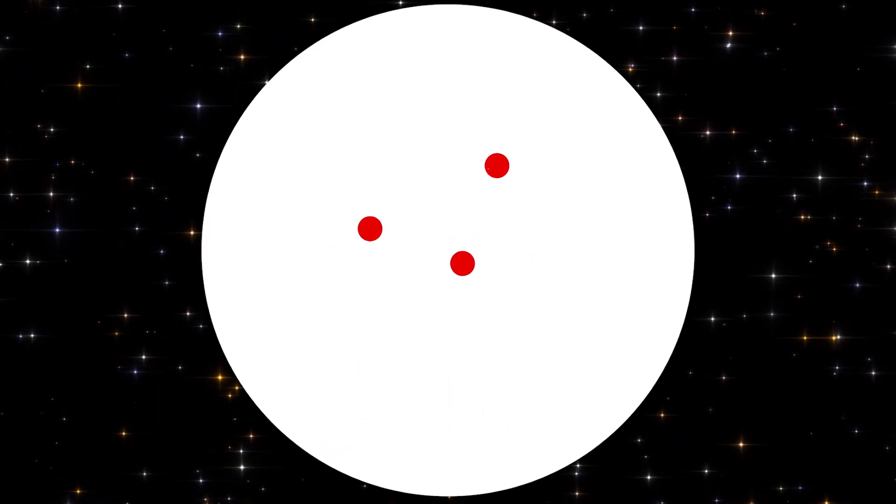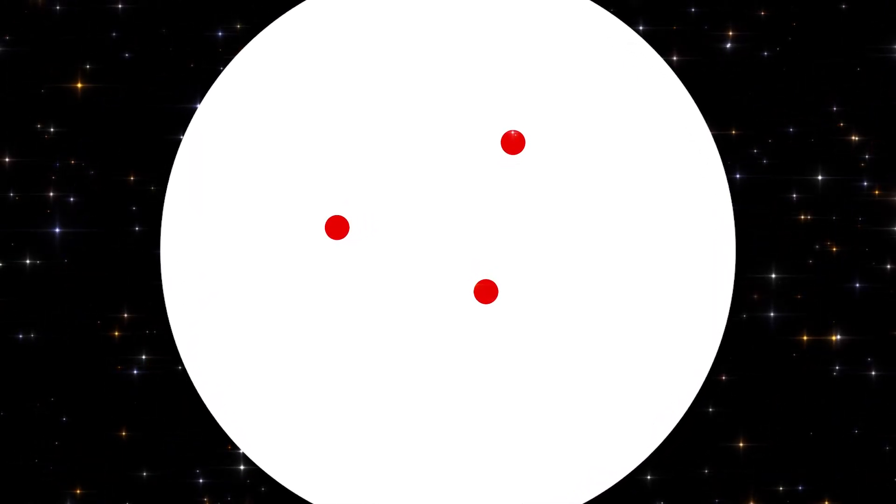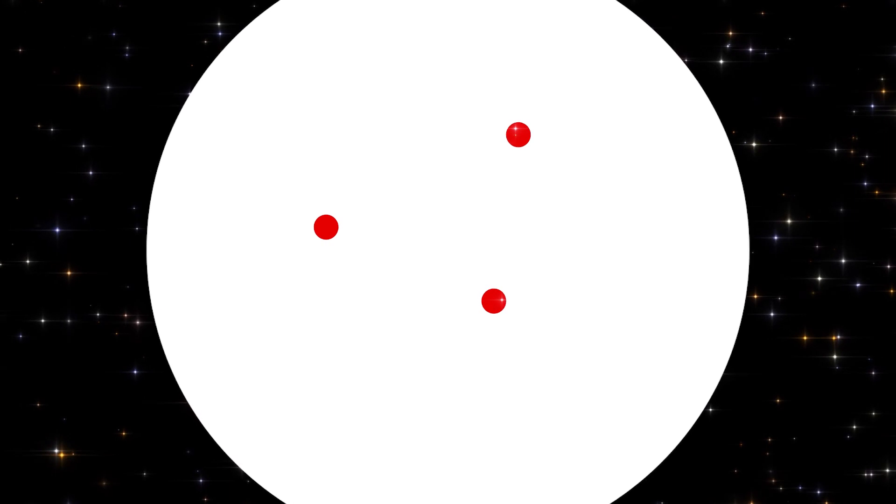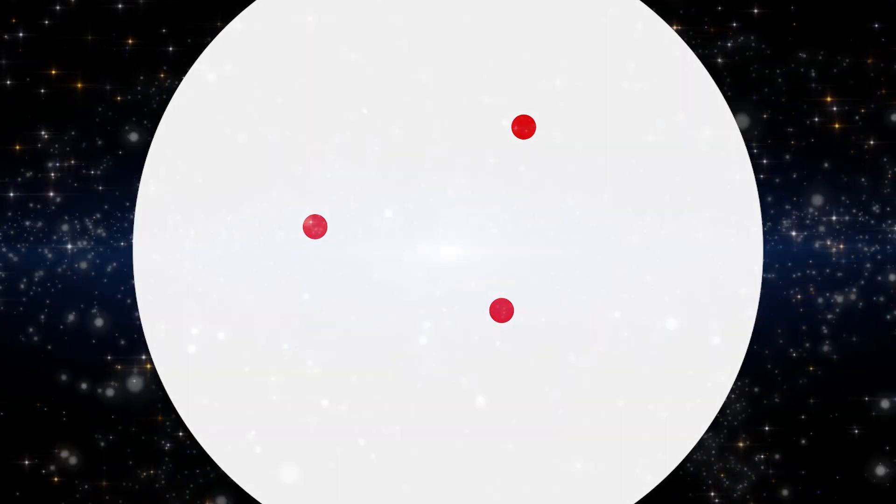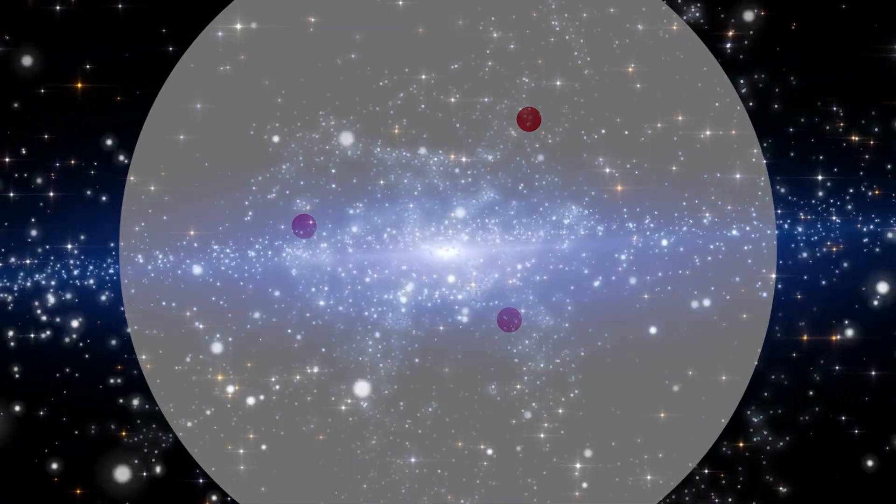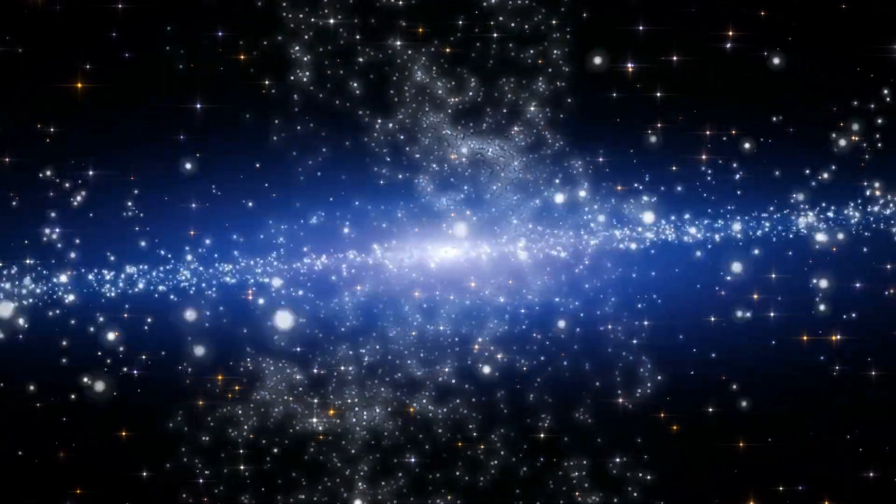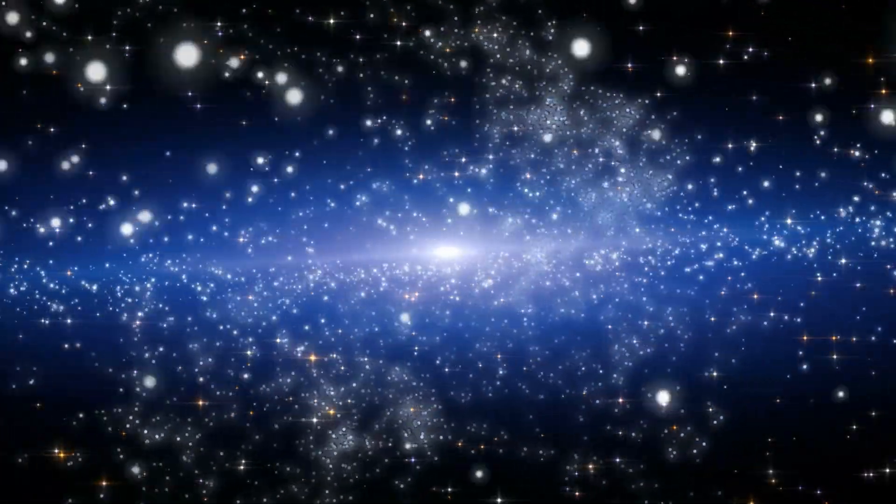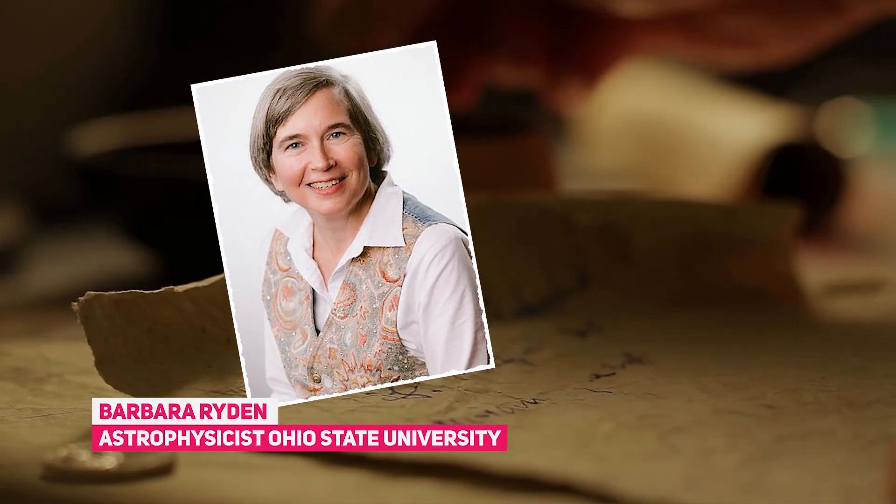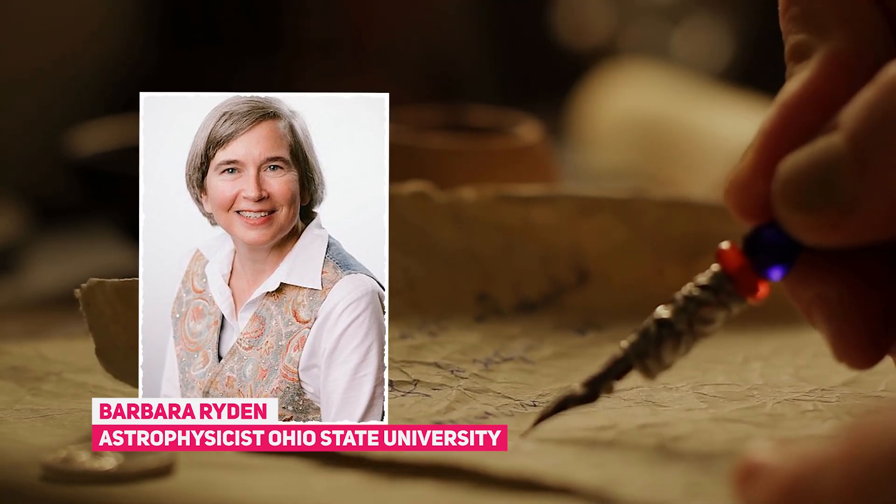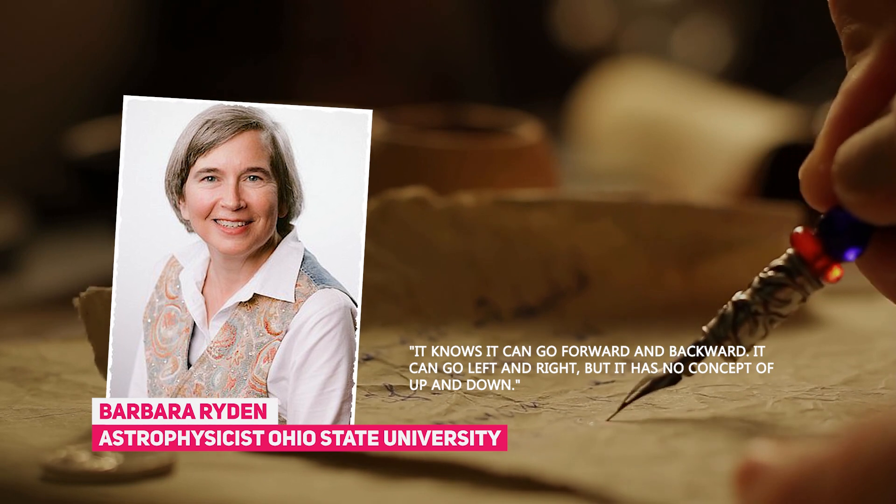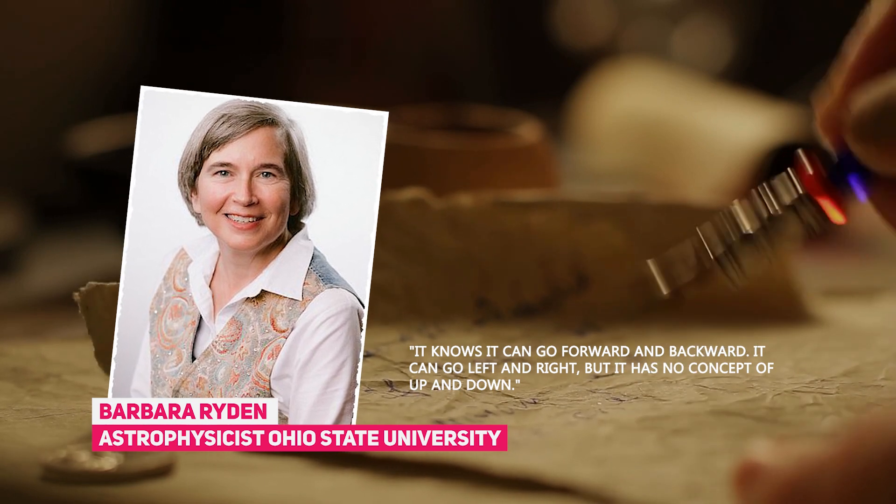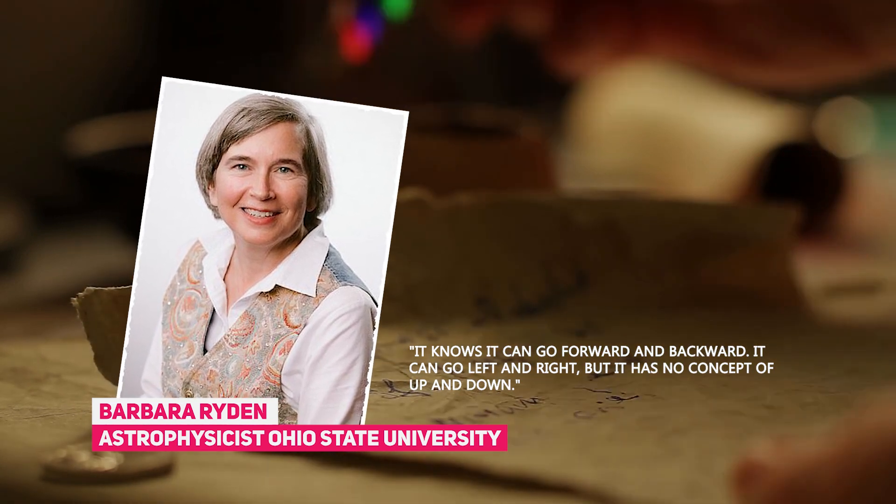Draw dots on the surface, and they will move away from one another, just like the galaxies in our real universe do. For the bug in this two-dimensional universe, any third dimension that expands perpendicular to the balloon's surface, like traveling into the center of the balloon, doesn't physically affect the bug. Barbara Ryden, an astrophysicist at The Ohio State University, said, It knows it can go forward and backward, it can go left and right, but it has no concept of up and down.